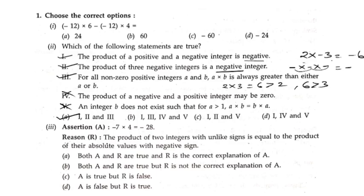Next, the product of two integers with opposite signs equals the product of their absolute values with a negative sign. Just as we have seen in the above example, when there are two integers with opposite signs and we find their product, we get the absolute value but with the negative sign. So option A is the correct explanation of the above example.